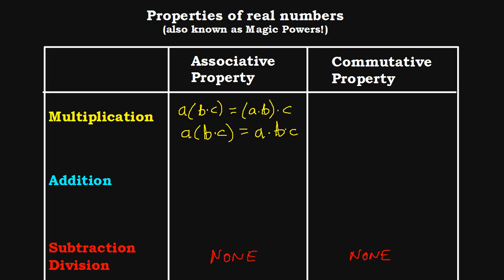Let's verify this actually works with numbers. Take 2 times (3 times 4): PEMDAS says 3 times 4 is 12, times 2 is 24. Is that the same as (2 times 3) times 4? Well, 2 times 3 is 6, and 6 times 4 is 24 — sure enough, the same result. So we can change the grouping any way we like, including removing grouping symbols altogether, as long as everything is multiplication.